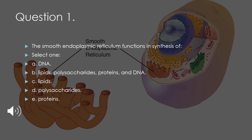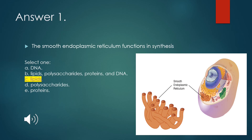Now let's check our knowledge with some questions from the chapter. You will have 30 seconds to think and then answer; you can also pause the video. Question 1: The smooth endoplasmic reticulum functions in the synthesis of: A. DNA, B. lipids, polysaccharides, proteins, and DNA, C. lipids, D. polysaccharides, or E. proteins. The answer to question 1 is C — lipids. They are synthesized in the smooth endoplasmic reticulum.